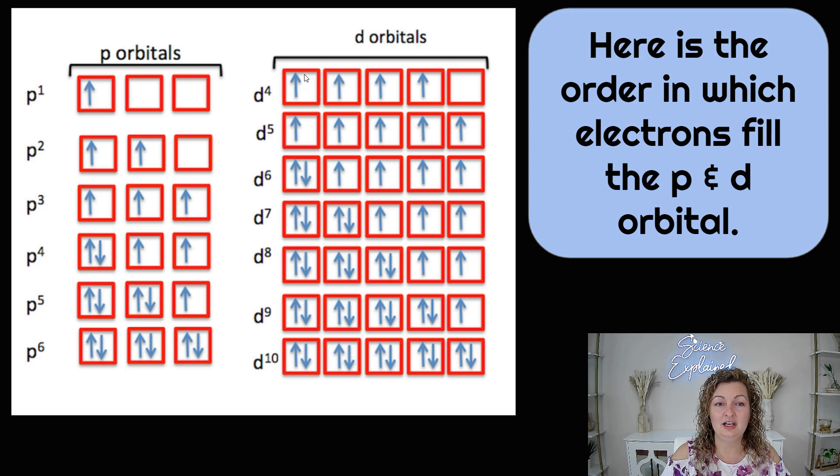Same thing with the D orbital. We can hold up to 10 electrons. Therefore, we have five boxes or you can have five underlines. So now in order to put the electrons in in the correct order, you are going to do the arrows pointing in the same direction. So this is upward and you're going to start in the first box. If you're adding a second one, it's also going to be upward, but now we're in the second box.